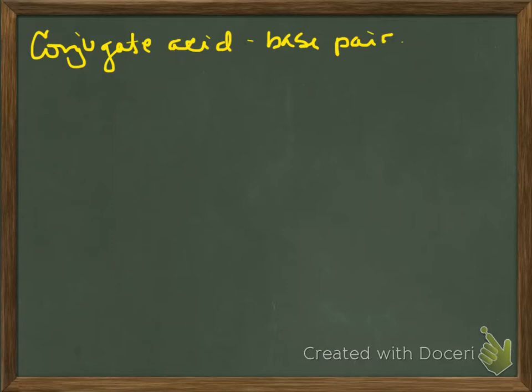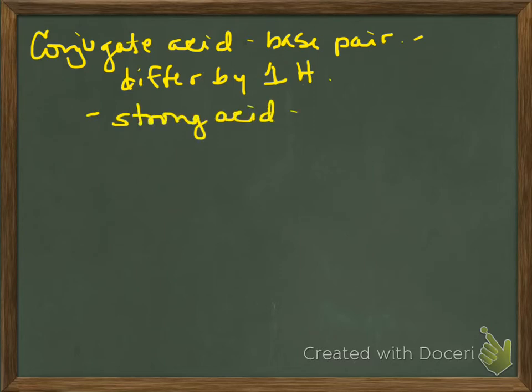Another term, conjugate acid-base pair. These are going to differ by 1H. And if you have a strong acid, you have a weak conjugate base.